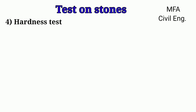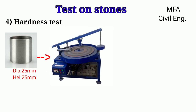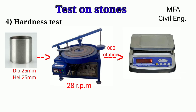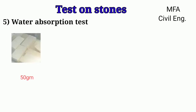Hardness test: This test is useful to determine the hardness of a stone. A cylinder of diameter 25 mm and height 25 mm is taken from the stone sample and wetted. It is placed in a Dory testing machine and pressed with a pressure of 12.5 Newton. The annular steel disk of the Dory machine is rotated at 28 revolutions per minute, and coarse standard specimen is sprinkled on top of the disk during rotation. After 1000 revolutions, the specimen is taken out and weighed. The coefficient of hardness is calculated as: Coefficient of hardness = 20 − (loss in weight in grams / 3).